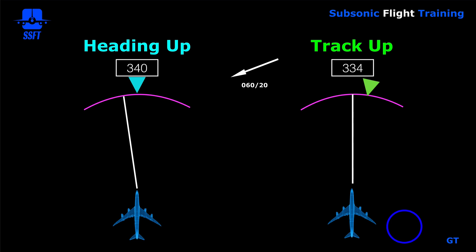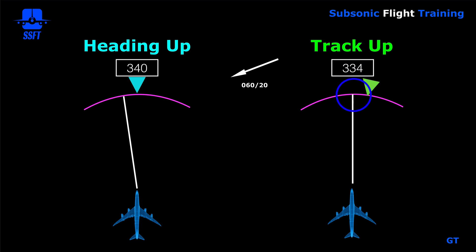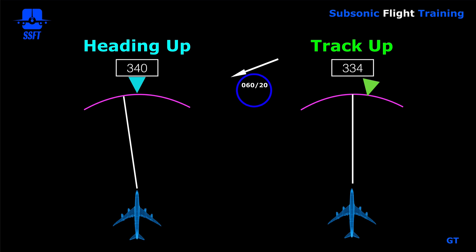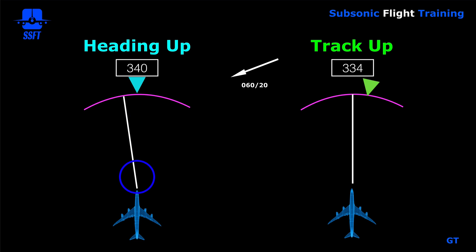The difference is what's displayed within the box. In a heading-up display, the upside-down triangle represents the heading and the track is referenced by the white line, with heading displayed at the top. In a track-up display, track is displayed at the top — the white track line goes from the airplane symbol all the way to the compass rose — and heading is displayed as the upside-down triangle. With a crosswind blowing from right to left, the heading and track differ in both cases.